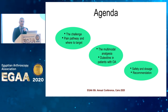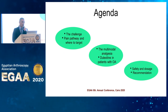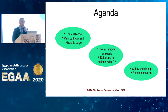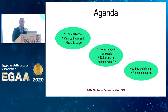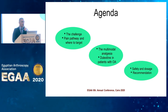We'll look at the concept of multimodal analgesia — the combination of different medications and pharmaceutical agents that can target and control pain at different sites of the pain pathway. We'll consider in particular duloxetine as an agent to be used in patients with osteoarthritis and other pathologies, and finally we'll look at the safety, dosage, and recommendations from different bodies around the world.